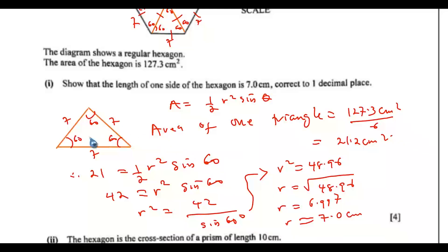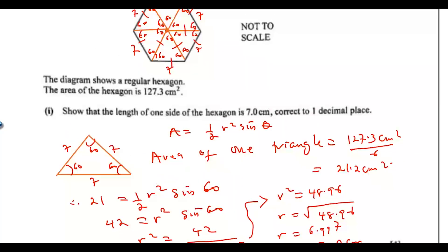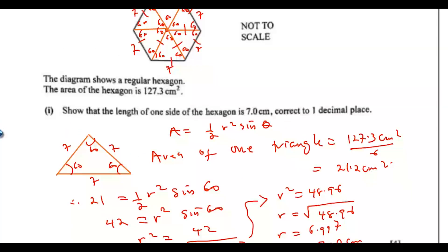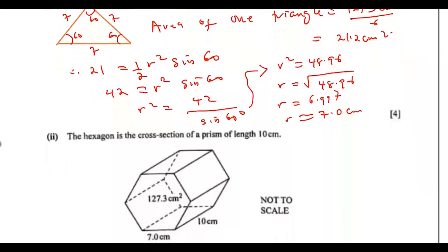So r equals 7 centimeters. Since we have an equilateral triangle, all three sides equal 7 — the two radii and the side of the hexagon. That is the solution to that part of the question.